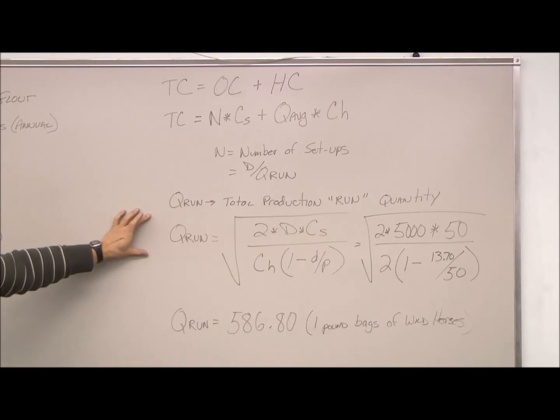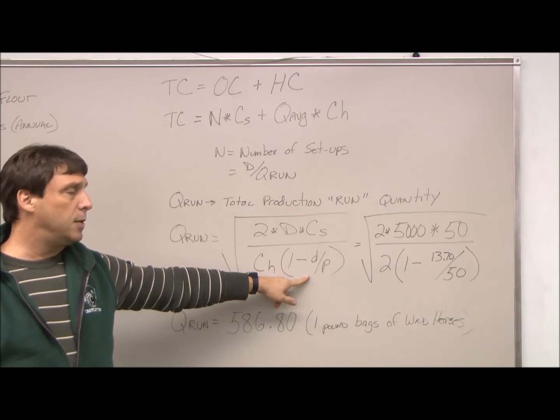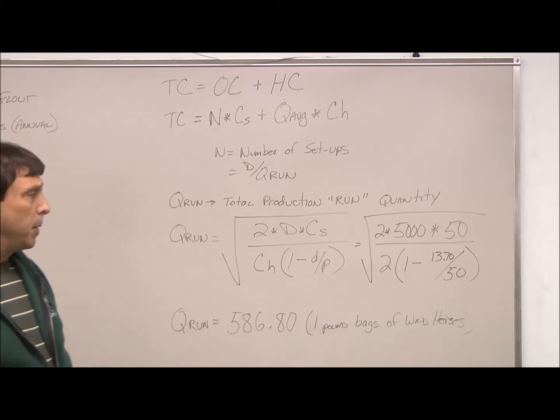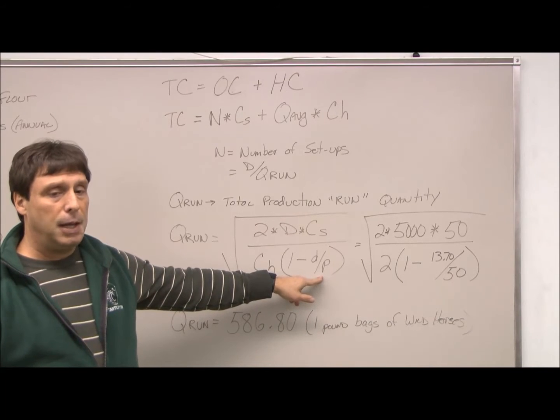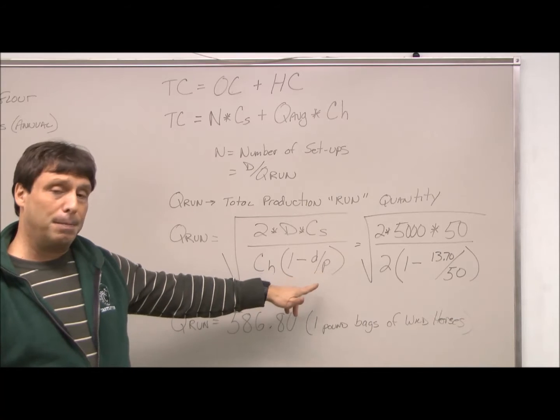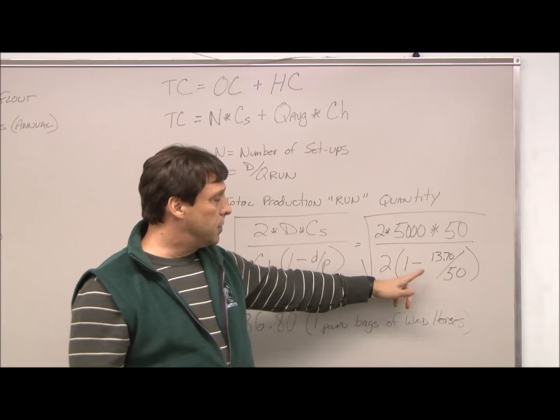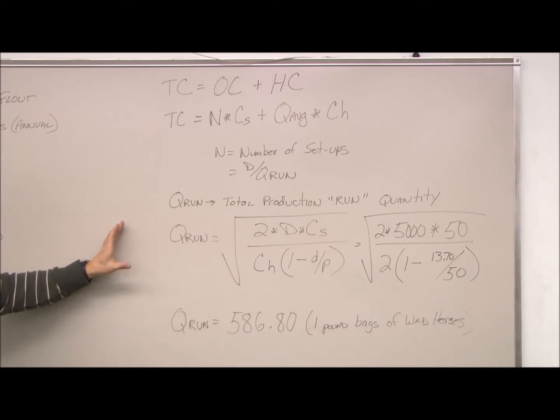We also need to figure out what Q run is to get started here. So very simply, we just plug it back into the formula. You notice this differs from the EOQ formula because we have to add a fraction in here that compensates for how much inventory is used up or demand that is satisfied while we're producing. In this case, we use 1 times D divided by P. I'm not going to go through the proof for you, but believe me, that's it. You notice that this will always be less than zero, so this will come out to a smaller quantity than we would have if we took the full amount.